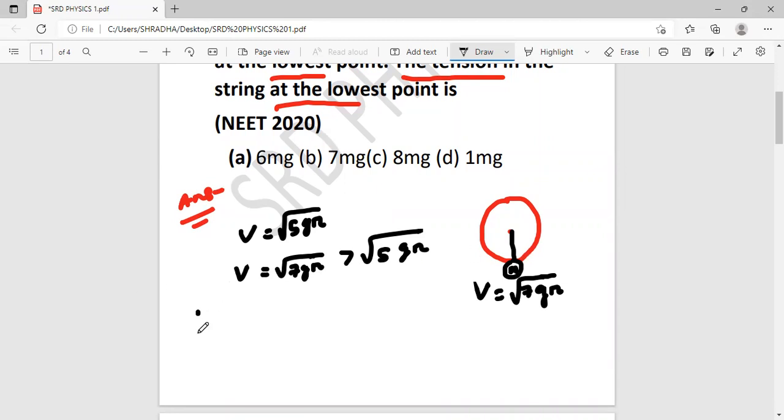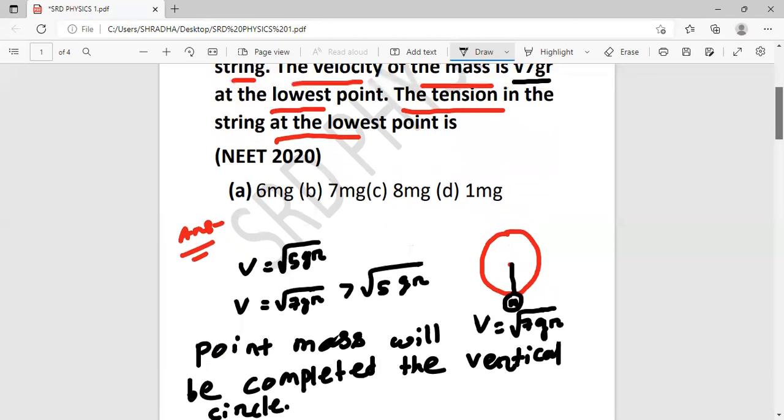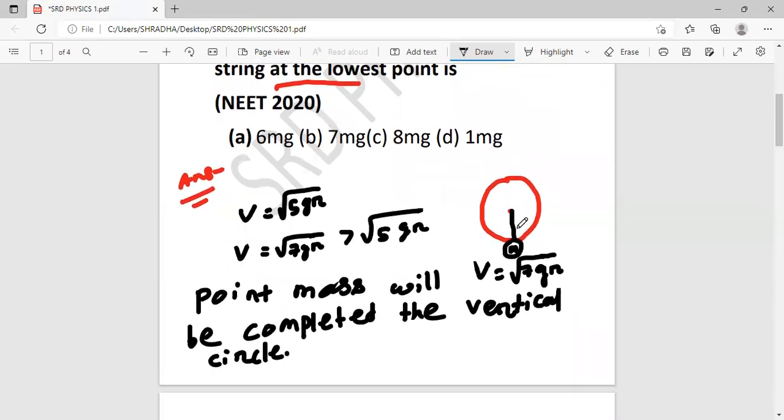This point mass will complete the vertical circle. The point mass is connected by a string.